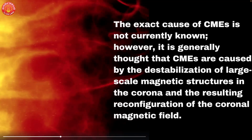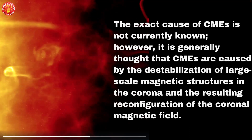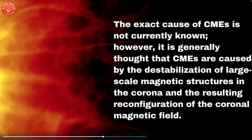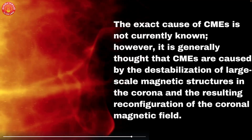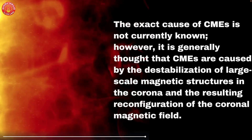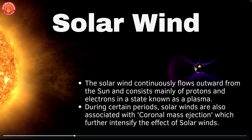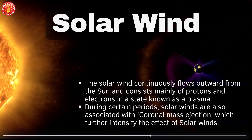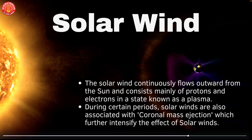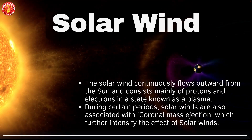Let us understand what exactly coronal mass ejection is a result of. We do not know the precise causes, but it is generally thought that CMEs are caused by destabilization of large-scale magnetic structures in the corona and the resulting reconfiguration of the coronal magnetic field. When there is a coronal mass ejection during certain periods, it intensifies solar winds and the hazards associated with them.